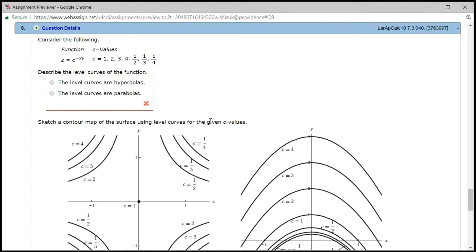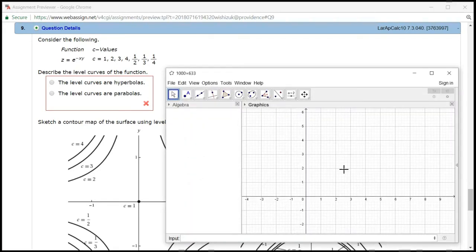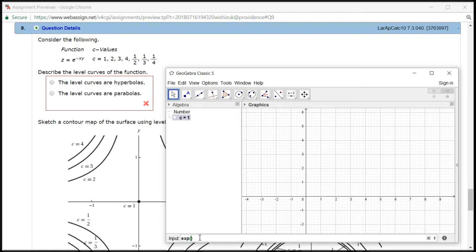So let's do that. I'm going to actually cheat a little bit here. I'm going to use GeoGebra. So I'm going to have c equal to 1. I'm going to just define that. And then we have e to the negative x times y, and we set that equal to c.